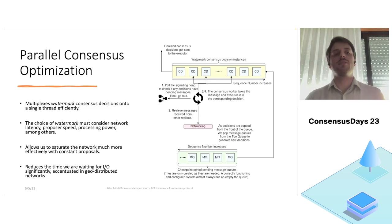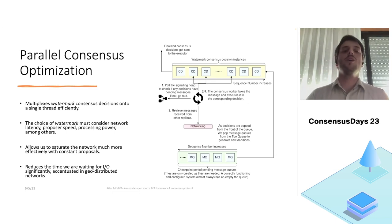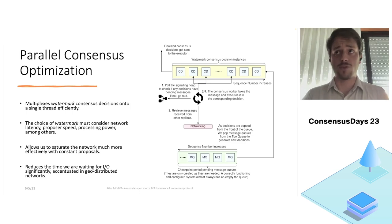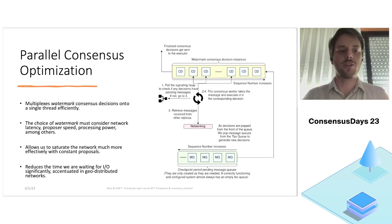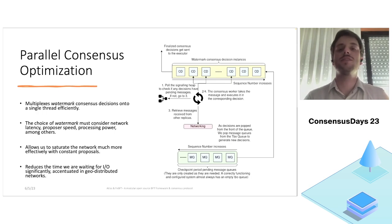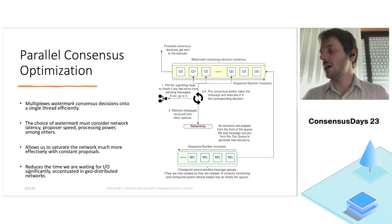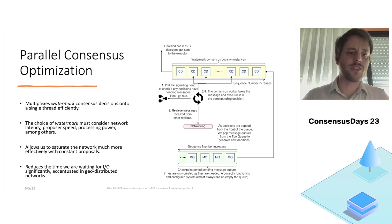Our next optimization addresses parallelizing consensus decisions. Most approaches we saw focused on having a thread per consensus decision executing in parallel. However, from our testing we observed that we don't actually need a thread per decision — it just introduces overhead to the operating system due to context switching, since each decision is mostly IO-bound and will be sleeping most of the time. Our idea was to multiplex a number of decisions onto a single thread and process those decisions in a non-fair way: sequence numbers closest to our latest decision are given priority over those further away, as they are most important to performance.